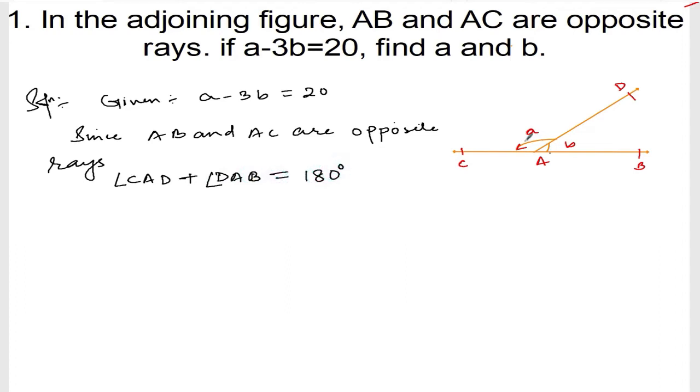This angle and this angle, if you add these two together, you are going to get 180 degrees. Angle CAD, it is A, plus angle DAB, this one is B. A plus B is equal to 180 degrees. This is equation number 1 and this is equation number 2.